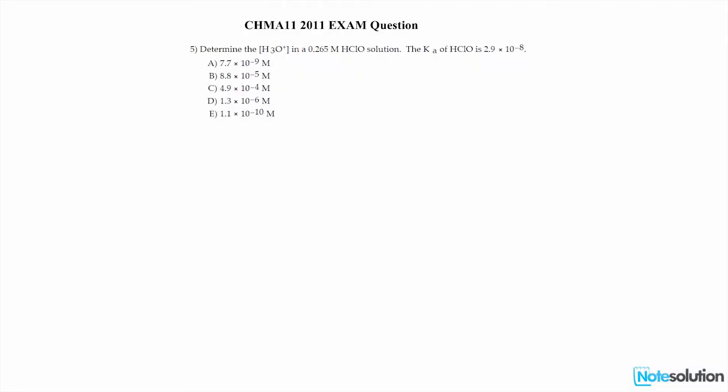This is question number 5 from your CHEM A11 2011 exam, and right away, a quick glance at the Ka of hypochlorous acid, which is 2.9 times 10 to the power of negative 8...